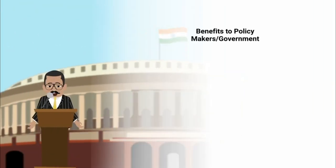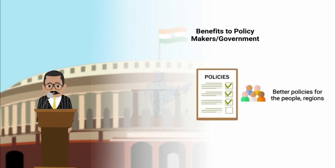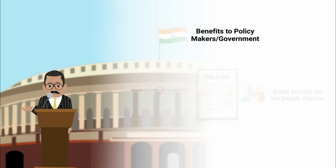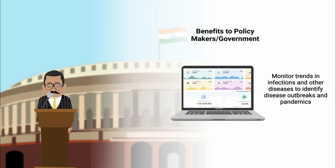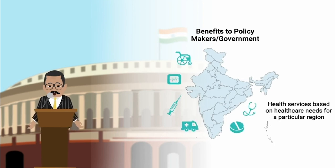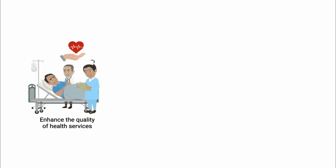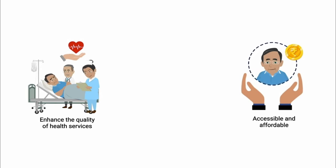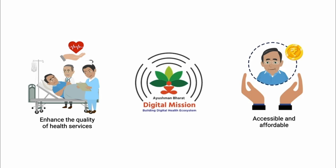Benefits to policy makers or government: the government can have more focused and better policies for people and regions with the availability of relevant data. Government can monitor trends in infections and other diseases to identify disease outbreaks and pandemics, and ensure the availability of health services based on healthcare needs for a particular region. To enhance the quality of health services and make them more accessible and affordable, the Government of India has introduced Ayushman Bharat Digital Mission, ABDM.